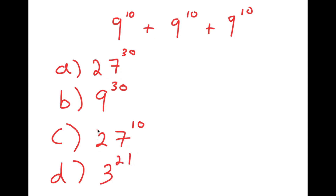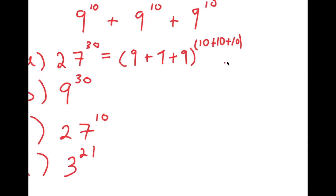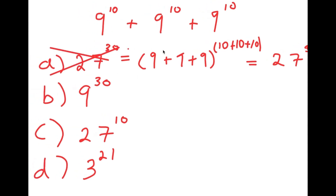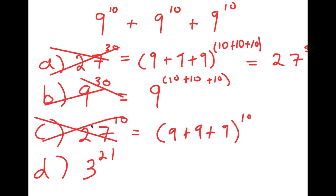Let's go through all the answer choices and see if they're right or not. For A, 27 to the power of 30 was likely gotten by adding all the bases and adding all the exponents: 9 plus 9 plus 9 to the power of 10 plus 10 plus 10, which equals 27 to the power of 30. This is actually wrong because that's not the proper way to add exponents. For B, 9 to the power of 30 was likely gotten by keeping the base the same and adding the exponents — also wrong. And for C, 27 to the power of 10 was gotten from adding the bases but keeping the exponent the same — also wrong.